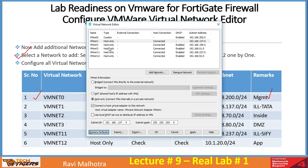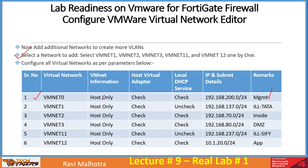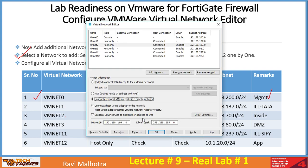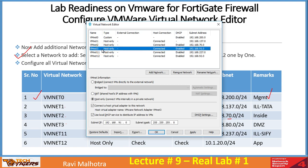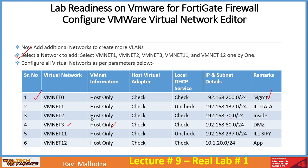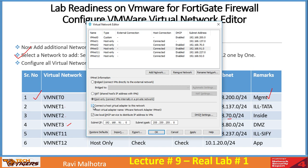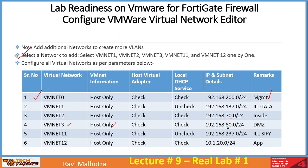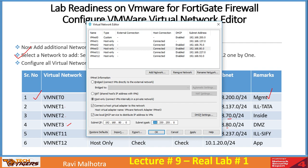For VMnet 2, set the network to 192.168.70.0/24. For VMnet 3, select 'Host Only', check 'Host Virtual Adapter', check 'Local DHCP service', and set the subnet to 192.168.80.0/24.